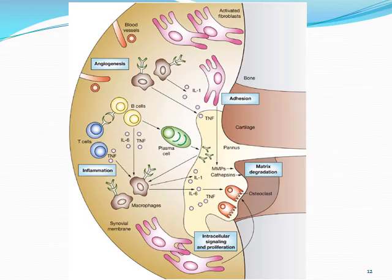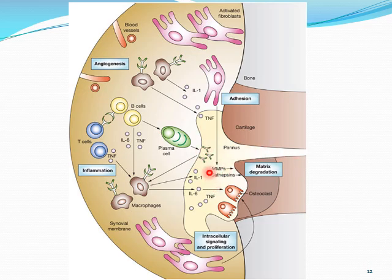Another picture shows bone and cartilage, with the joint and the inflamed synovial lining — the pannus. Many different cells are interacting with one another, all working together to propagate this inflammation.